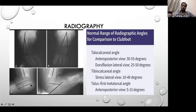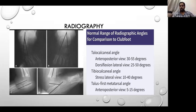Similarly, in the dorsiflexion view, the C part is a clubfoot and B is a normal foot. For the talo-calcaneal angle on the lateral view, the normal range is 10 to 40 degrees, and the talus-first metatarsal angle is about 5 to 15 degrees. These are the normal range of angles which need to be achieved by the end of treatment.